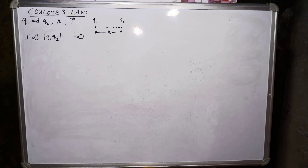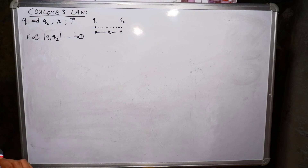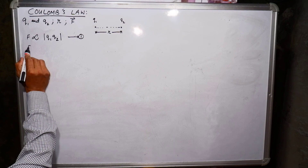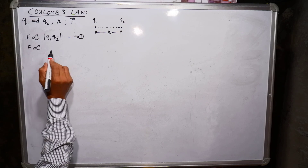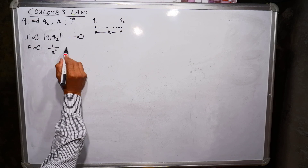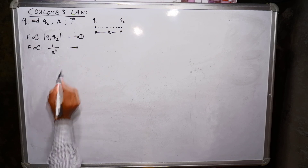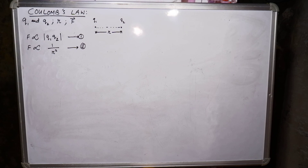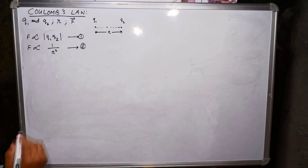According to the second part of the same statement, the force is also inversely proportional to the square of the distance between their centers. So F is inversely proportional to 1 by R square. Name this as equation number two.